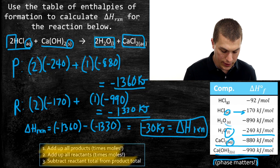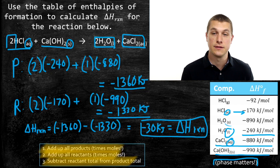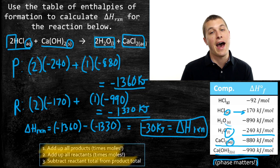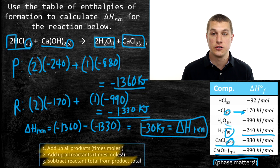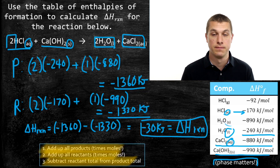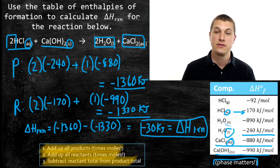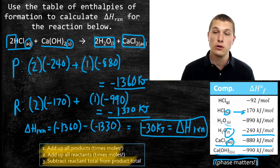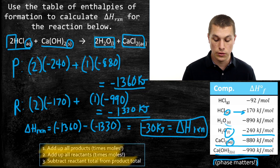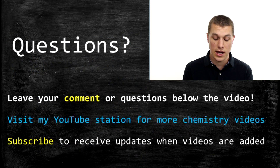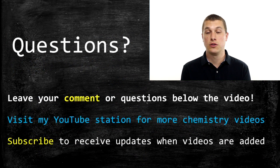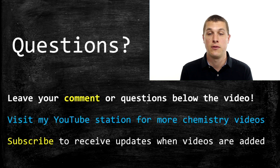You can calculate the enthalpy of reaction from heats of formation by adding up all the products times the number of each, and all the reactants times the number of each, then taking products minus reactants — final minus initial — to get the heat of reaction. You can do this for any reaction, even one you've never run before, and that's what makes heats of formation so useful. If you have questions, ask them below, and subscribe to Real Chemistry for future videos.